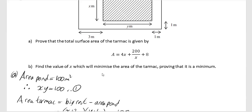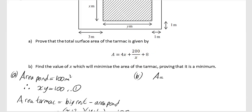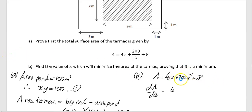The area is A equals 4x plus 200/x plus 8. It's difficult to differentiate the middle term as written, so convert to index form: 200/x becomes 200x⁻¹. Differentiating with respect to x: dA/dx equals 4 minus 200x⁻².